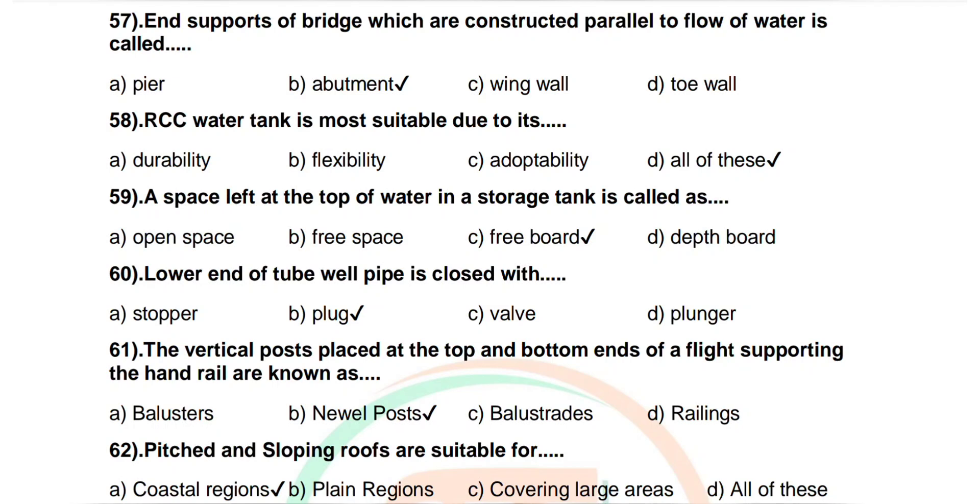Question number 59: Space left at the top of water in a storage tank is called as. Options are open space, free space, free board, depth board. Correct answer: free board.